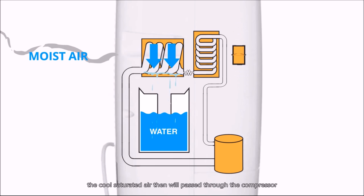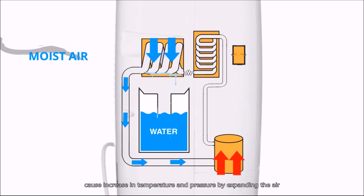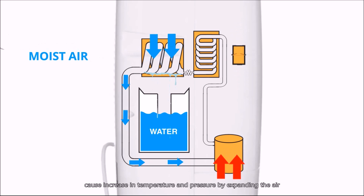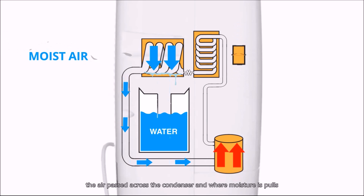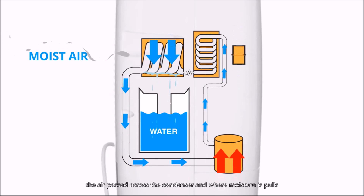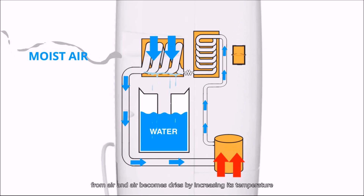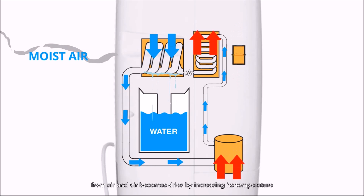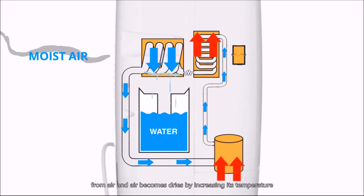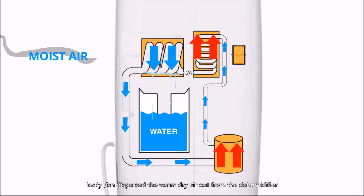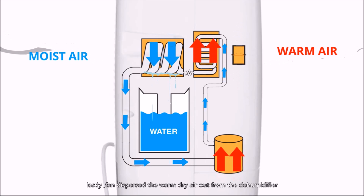The cool saturated air then passes through the compressor, causing an increase in temperature and pressure by expanding the air. The air passes across the condenser, where moisture is pulled from the air and the air becomes dry by increasing its temperature. Lastly, the fan disperses the warm dry air out from the dehumidifier.